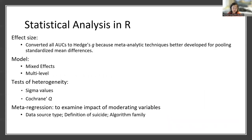All analyses were conducted in R, which is a free statistical programming software. Packages required to run these statistics and other very powerful statistics are free to use and easy to implement, and there are many resources online that can teach you how to use R, as well as communities where you can pose questions and crowdsource solutions. We converted all AUCs into Hedges' Gs because meta-analytic techniques are better developed for pooling standardized mean differences.